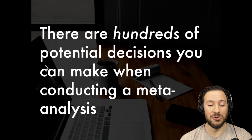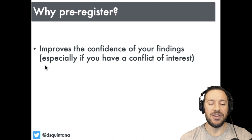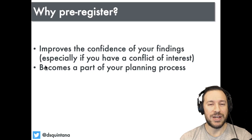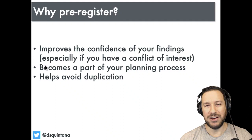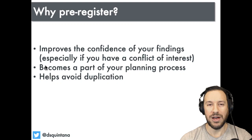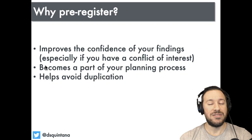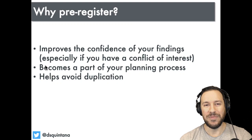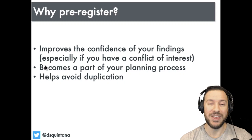There are a few reasons why you should pre-register your meta-analysis. It improves confidence in your findings for readers, especially if you have a conflict of interest — financial or intellectual. It becomes part of your planning process and helps avoid duplication. There are a few different meta-analysis registries, and before you embark on one it's always good to check whether someone else has been working on the same thing. Pre-registering can also help establish precedence for who started working on a project first.